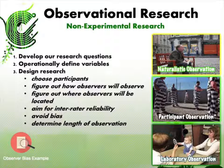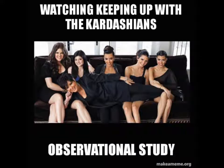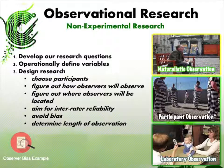The first major category of data collection methods is observational research — really the most obvious way to collect data: just watch people and record what you see. The only difference between the casual watcher and the researcher is the systematic recording of behavior. We'll talk about three types of observational research: naturalistic, participant, and laboratory. It's important to note that all of these are non-experimental research designs.